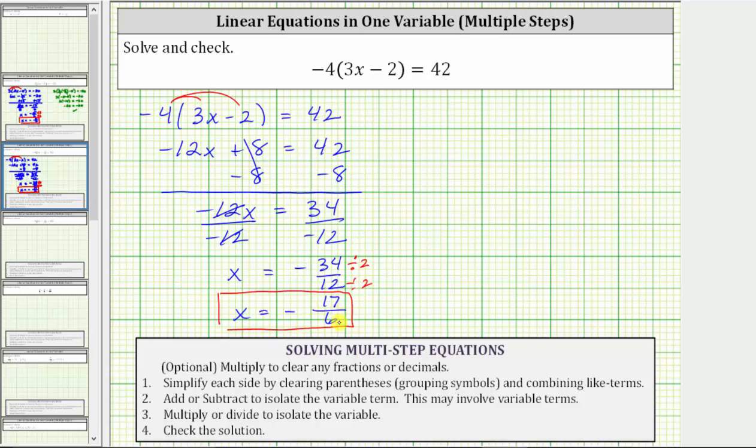Which means if we substitute negative 17 sixths for x in the original equation, it must satisfy the equation or make the equation true. And let's go ahead and check this.